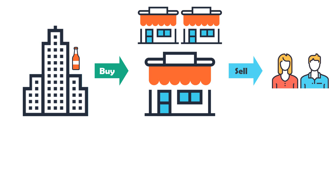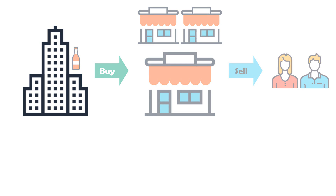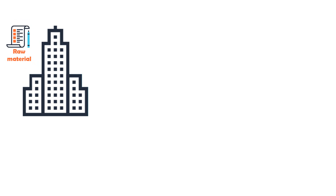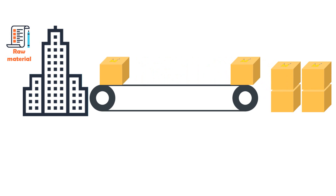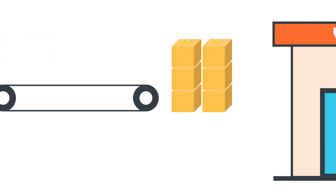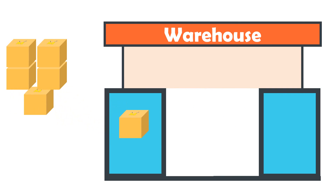Let's take a closer look at this example and how everything works in detail. We have the manufacturer here — he produces juice. In order to produce the juice, the manufacturer needs certain raw materials. So the manufacturer buys the raw materials, processes them, and makes a juice out of them. After production, the juice is packed in packets and then taken to the warehouse and stored there.